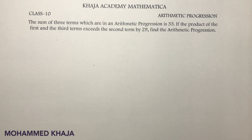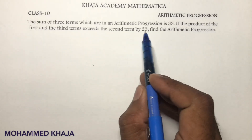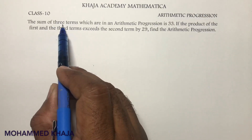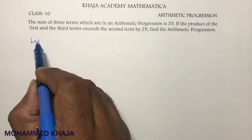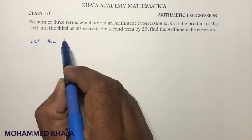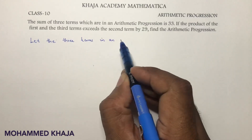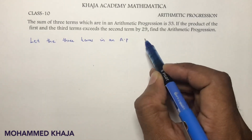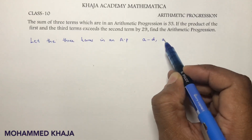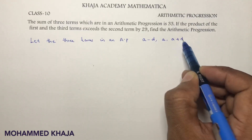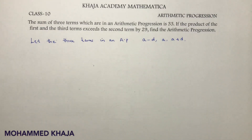The sum of three terms which are in an arithmetic progression is 33. If the product of the first and third term exceeds the second term by 29, find the arithmetic progression. Since there are three terms, let the three terms in an AP be a minus d, a, and a plus d. If you take it like this, the problem will become easy to solve.